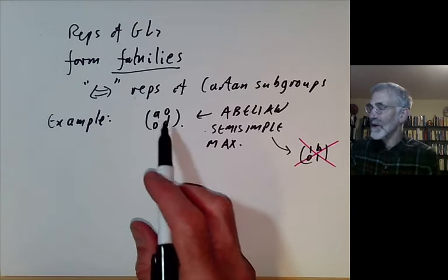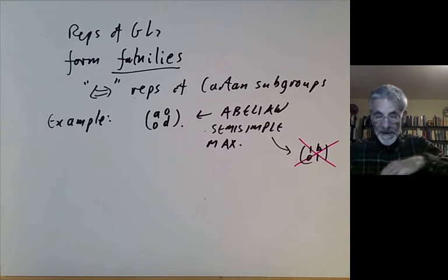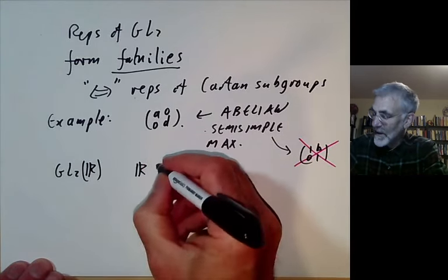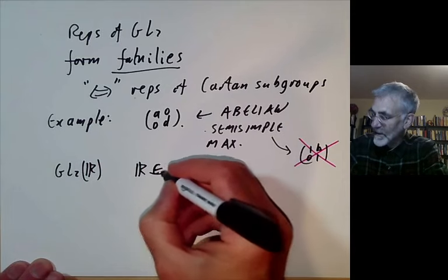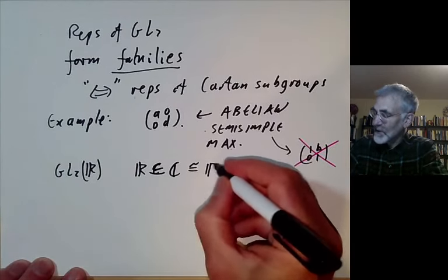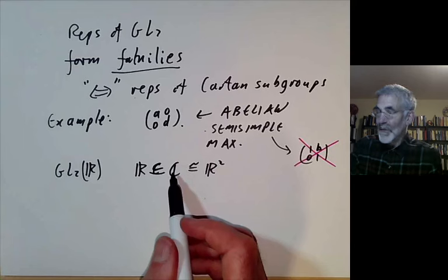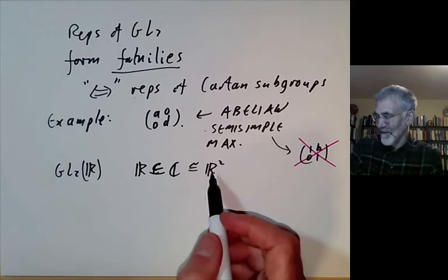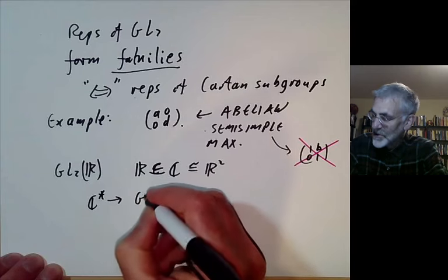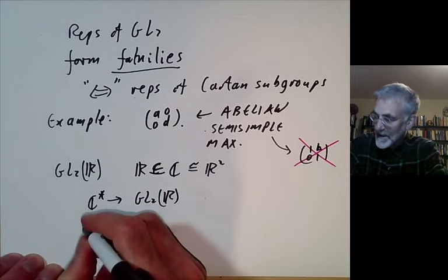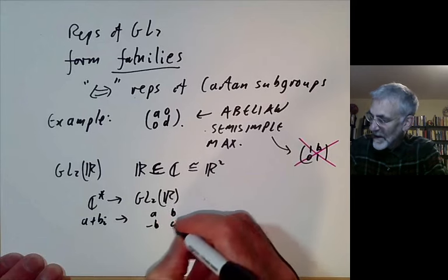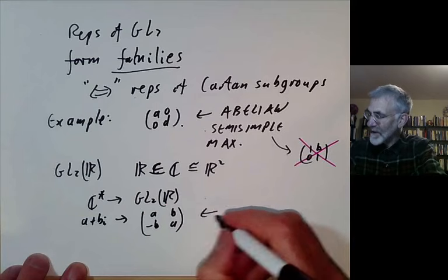An obvious Cartan subgroup is the group of diagonal matrices. There's a slightly less obvious one: for GL2 of the reals, the reals are contained in the complex numbers, which are isomorphic to R² as a real vector space. The complex numbers act on R² by multiplication, giving a map from the non-zero complex numbers to GL2(R) sending a+bi to the matrix [[a,b],[-b,a]]. This is another Cartan subgroup.